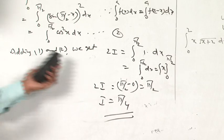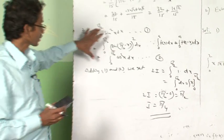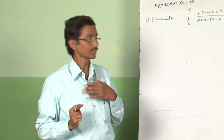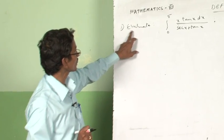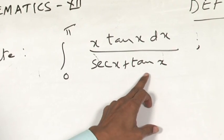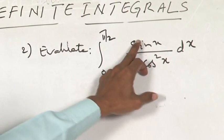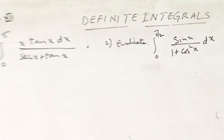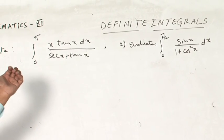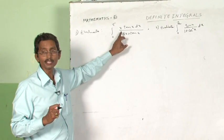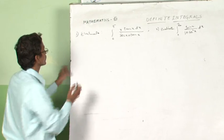This is the easy way to evaluate such questions using the properties of definite integrals. There are two practice questions: first, evaluate integral from 0 to π of x tan x / (sec x + tan x) dx; second, evaluate integral from 0 to π/2 of sin x / (1 + cos²x) dx. The property used here is: integral from 0 to a of f(x) dx = integral from 0 to a of f(a − x) dx.